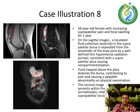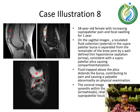Case illustration 8: a 58-year-old female with increasing suprapatellar pain and focal swelling for 1 year. On sagittal images, a loculated fluid collection shown by the asterisk in the suprapatellar bursa is separated from the remainder of the knee joint by a well-defined thin hypointense septation, consistent with a suprapatellar plicae causing compartmentalization. Fluid trapped above the plicae extends the bursa, contributing to pain and causing a palpable abnormality on physical examination. The coronal image reveals diffuse synovitis within the joint, relatively sparing the suprapatellar loculation.